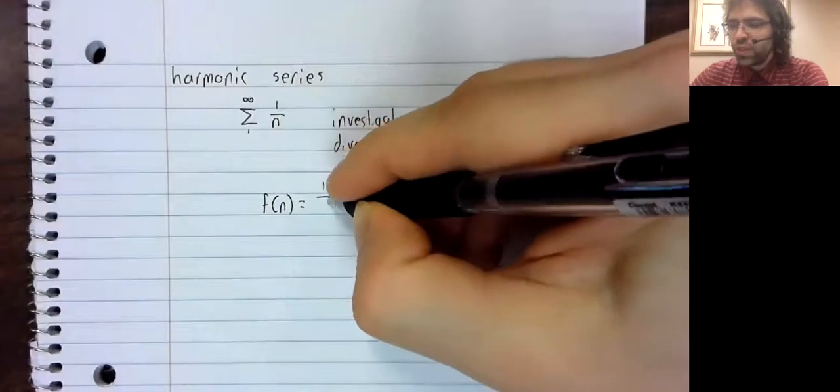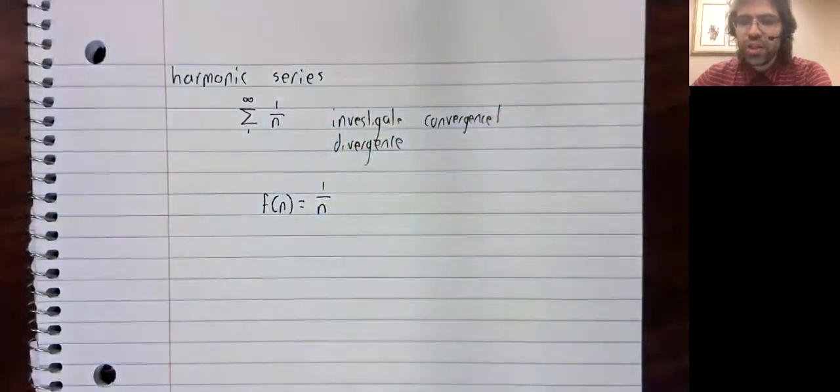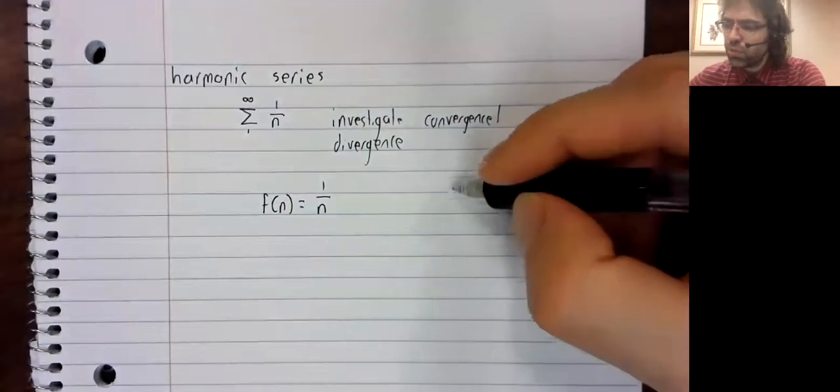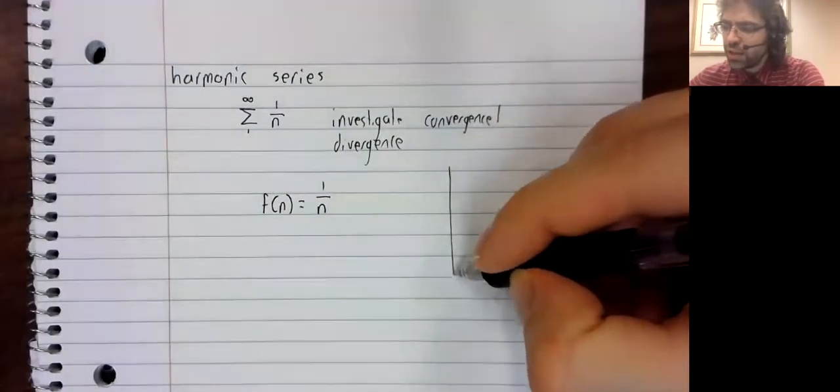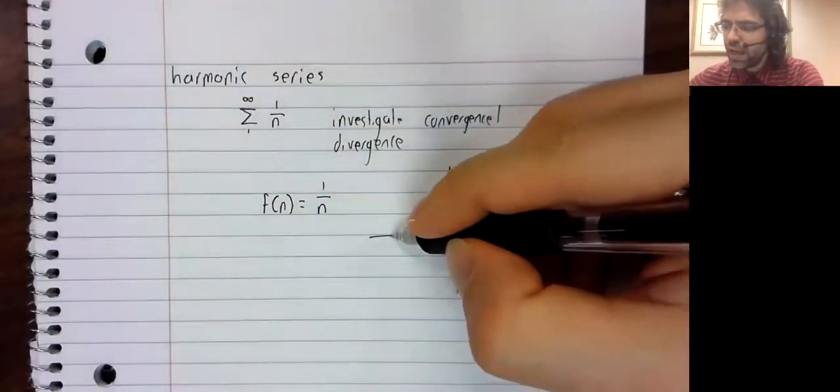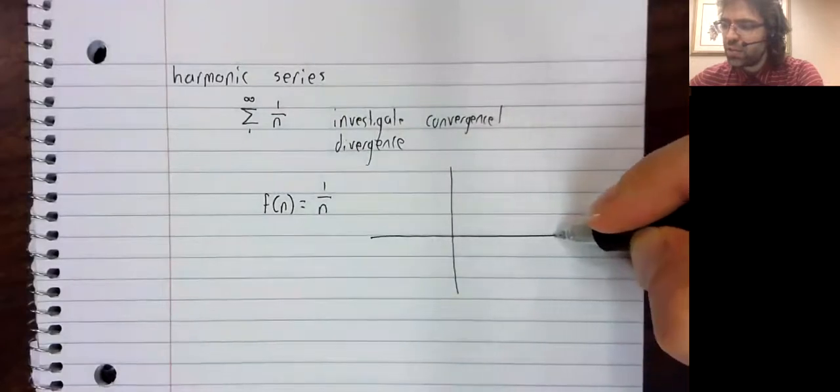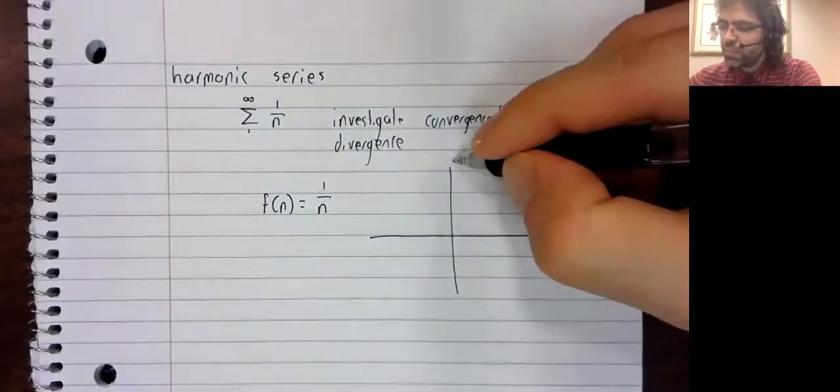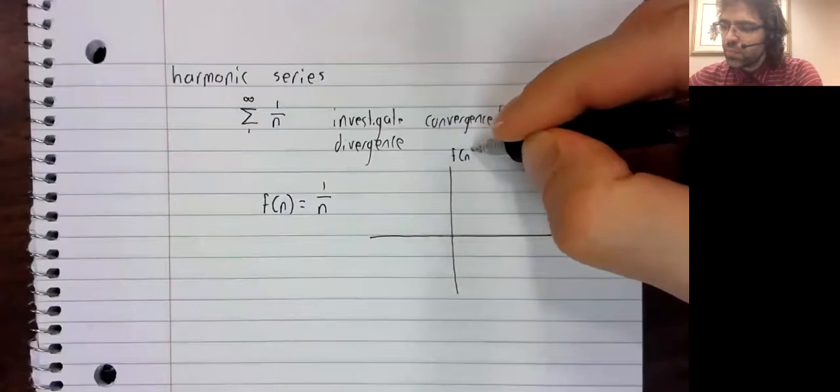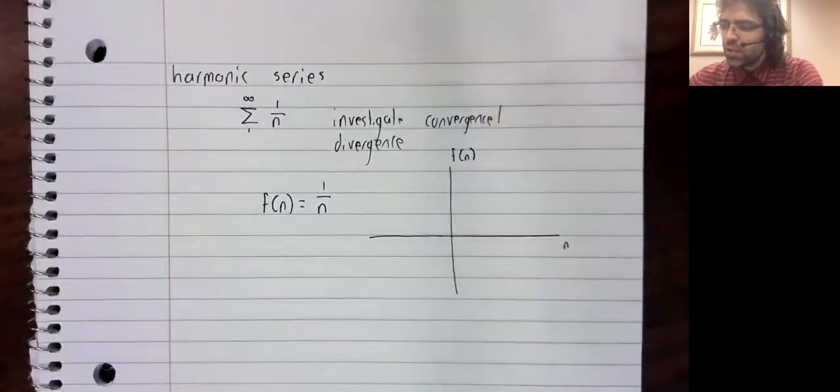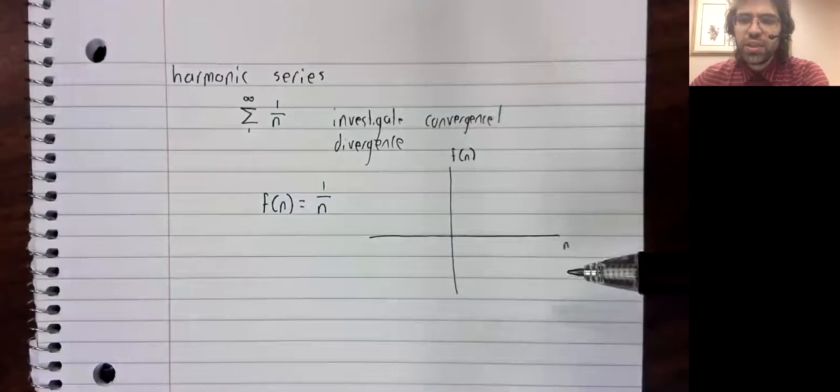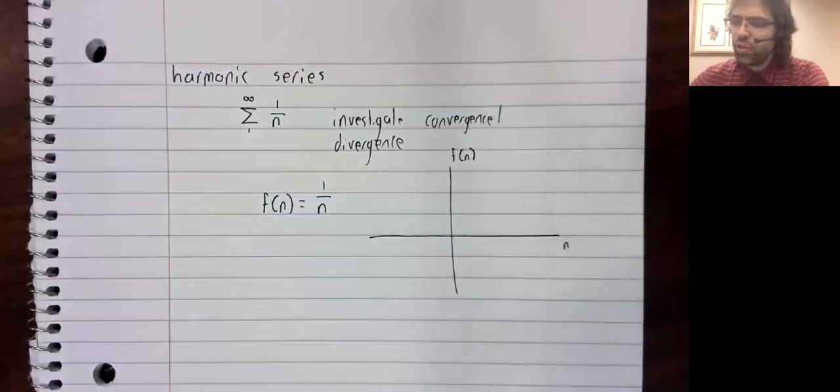We define a function f(n) equals one divided by n. This function is continuous.